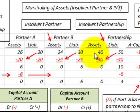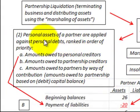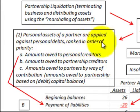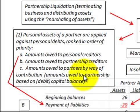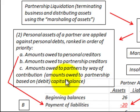Next, we look at Partner A and Partner B under the marshalling of assets concept. The personal assets of partners are applied against personal debts in order of priority: first, amounts owed to personal creditors; second, amounts owed to partnership creditors; and third, amounts owed to the partnership by way of contribution — that is, the capital balance. If there's a debit balance, the partner must pay that back to the partnership.